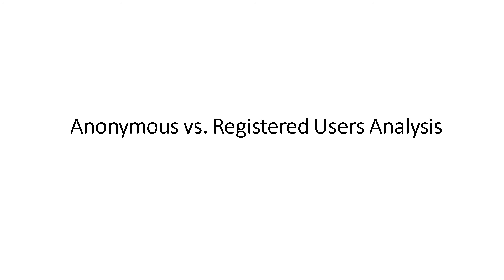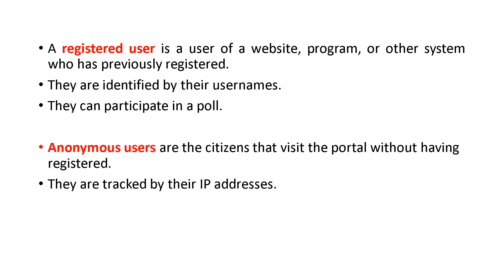Next is anonymous versus registered users analysis. There are two types of users: registered users, who have been registered in a website or program and are identified by their usernames; and anonymous users, who have not been registered and are tracked by their IP addresses. Today we have seen web analytics, clickstream analytics, engagement, and registered versus anonymous users. Hope it is clear for you. Thank you.